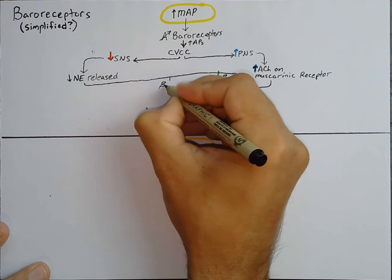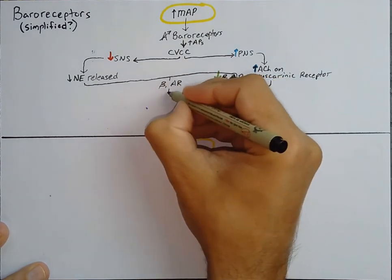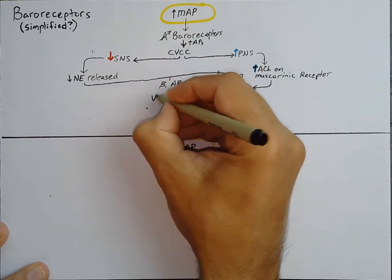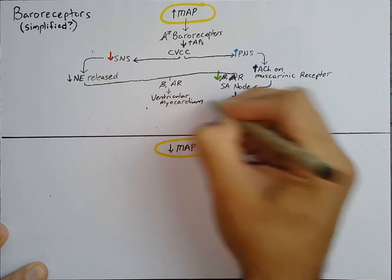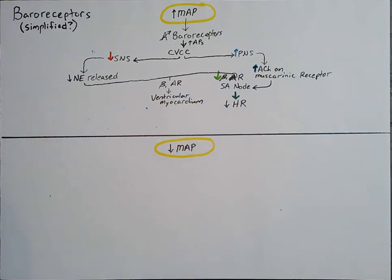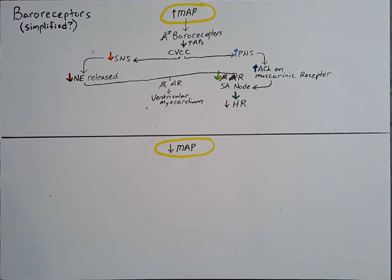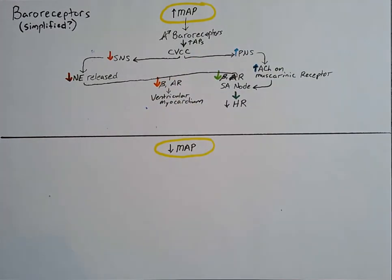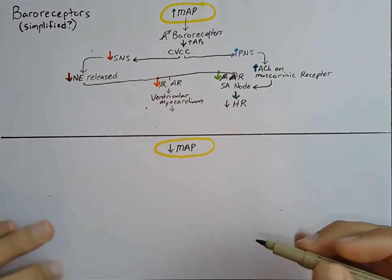We also find beta-1 adrenergic receptors on the ventricular myocardial cells — this typically acts on the ventricular myocardium. If beta-1 adrenergic receptors normally activate ventricular myocardium, what's going to happen when we decrease the amount of norepinephrine in this system? We've decreased the amount of norepinephrine, so we know we are going to decrease the activation of beta-1 adrenergic receptors. Ultimately, if we are inhibiting this process, then what's going to end up happening is we are going to inhibit the force of contraction.